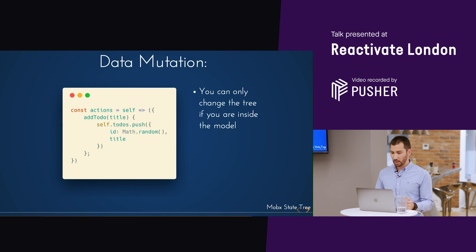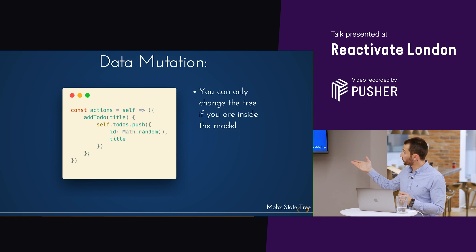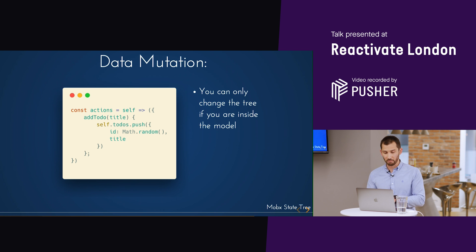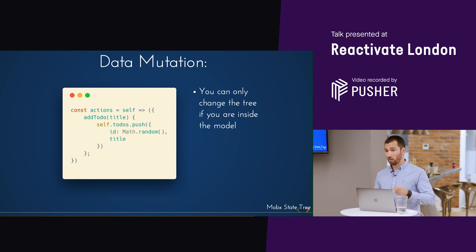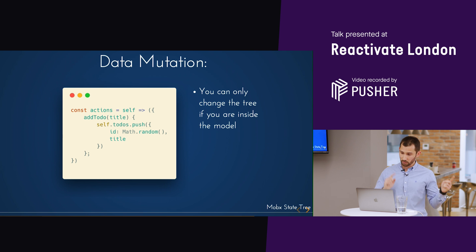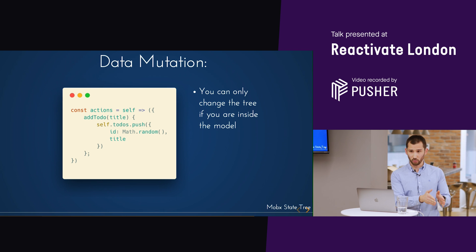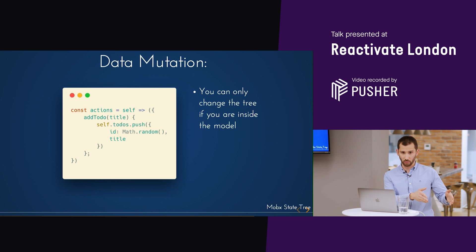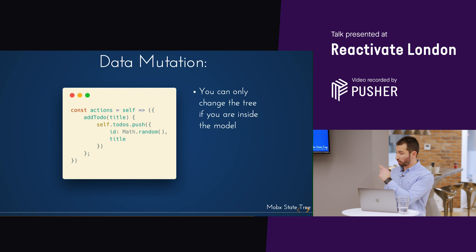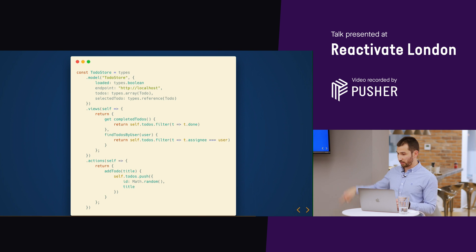Actions — data mutation — are what we use to change the state, and in the state tree they are built-in. This is quite important: you can only change the tree if you're inside the same model. Coming back to the ToDo and ToDoList example, if you want to change the state of ToDo, the action must be declared and triggered within the ToDo model — you cannot do it from a different tree.